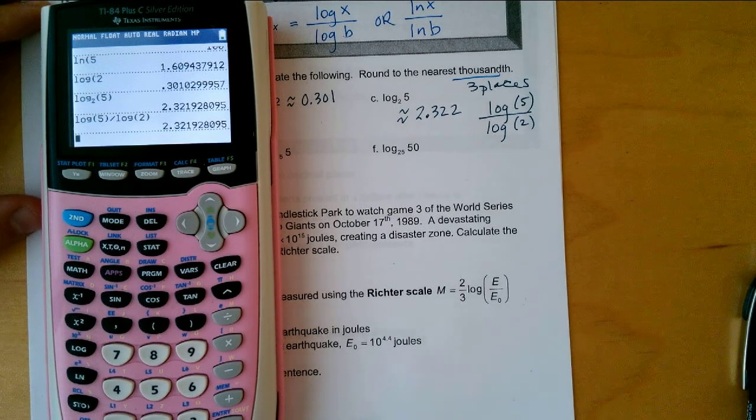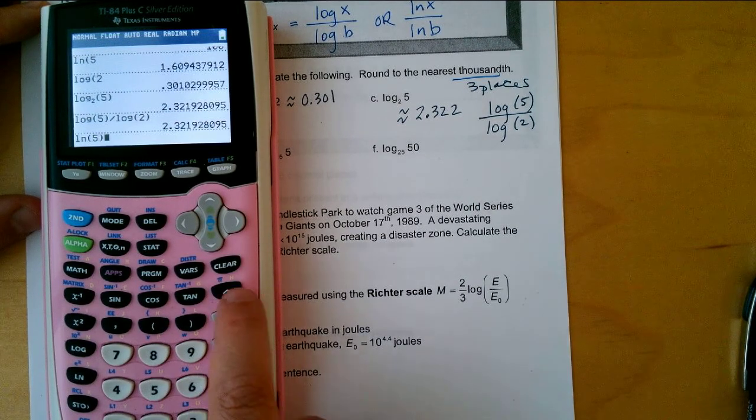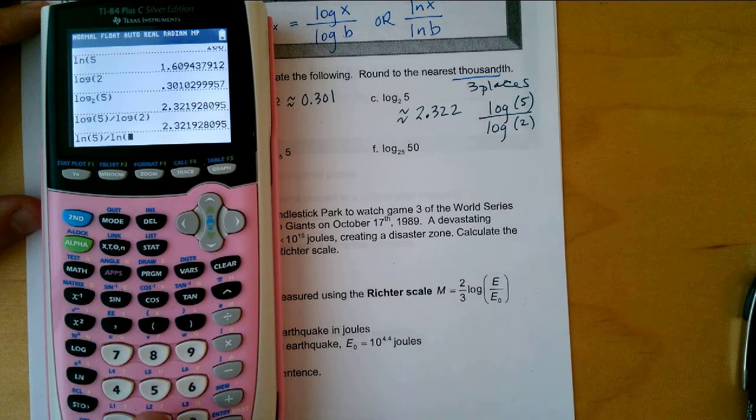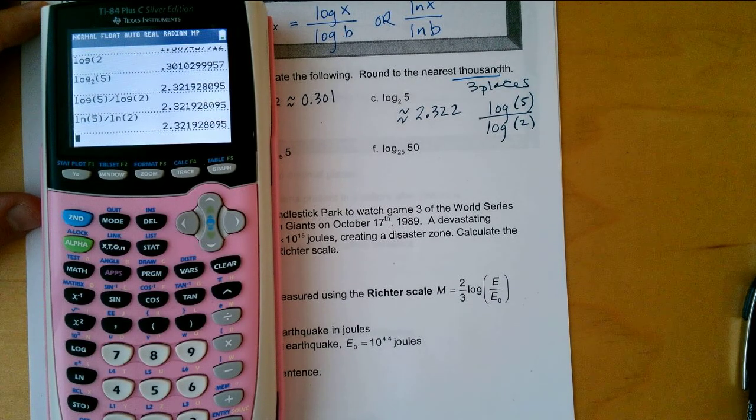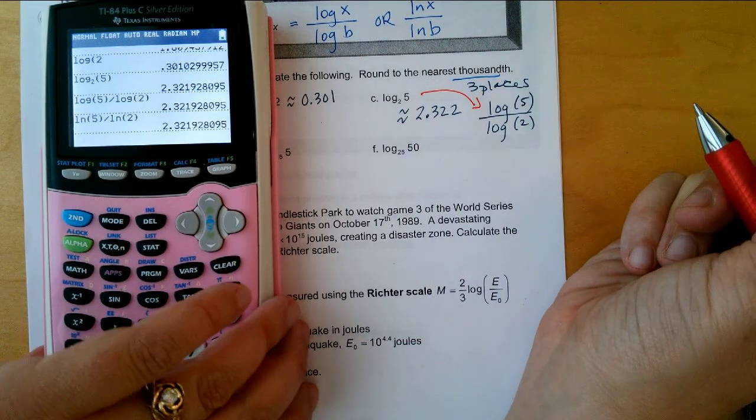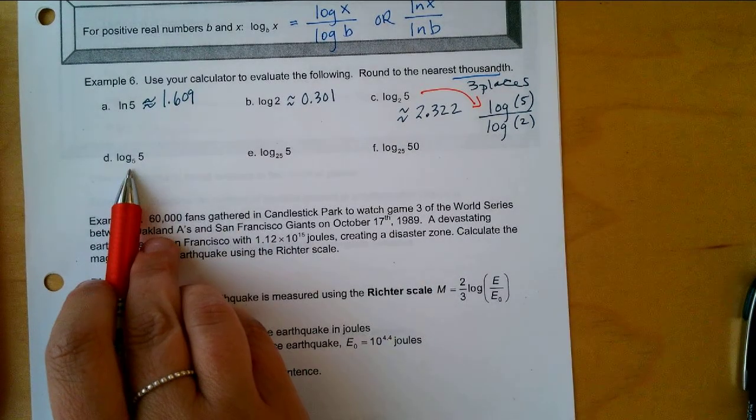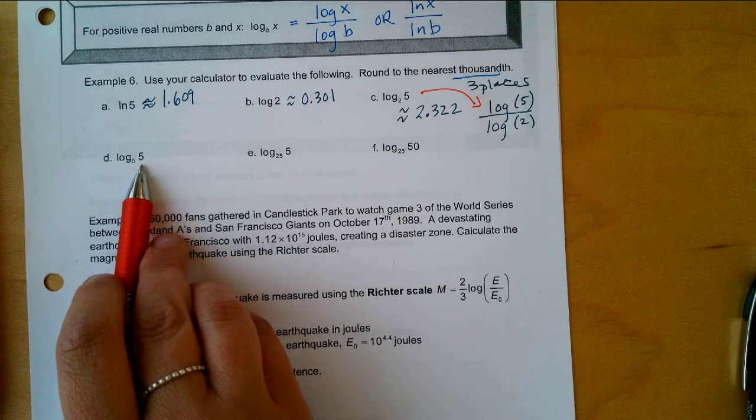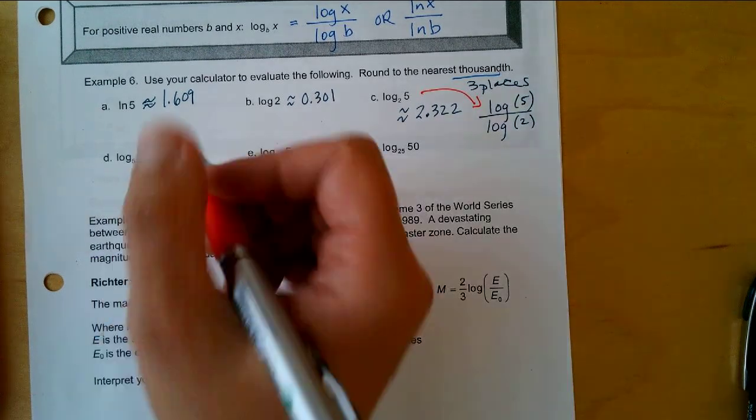What would happen if I did ln of five divided by ln of two? I also get the exact same thing. So that would be how you could use the change of base on an older graphing calculator or maybe even a regular scientific calculator.